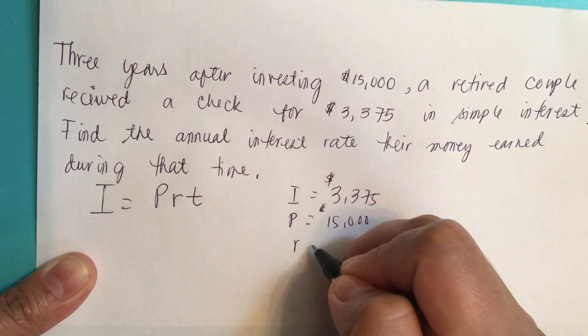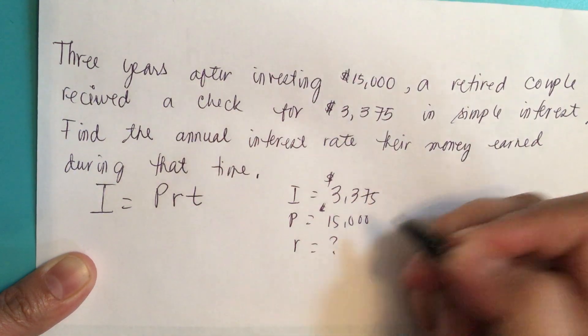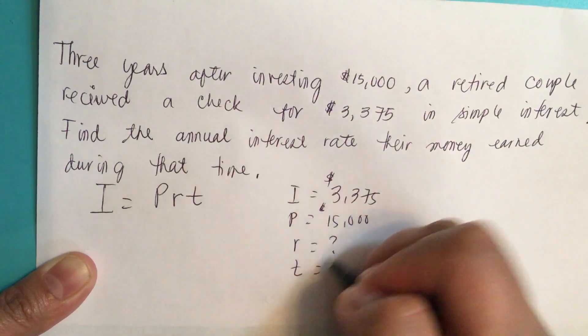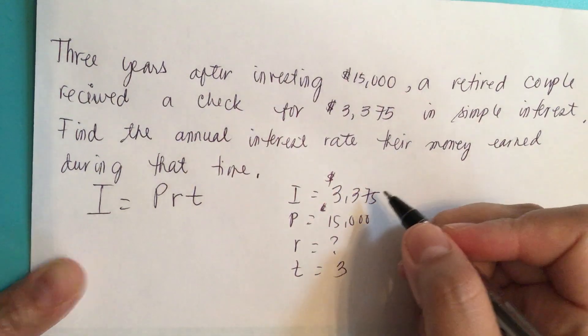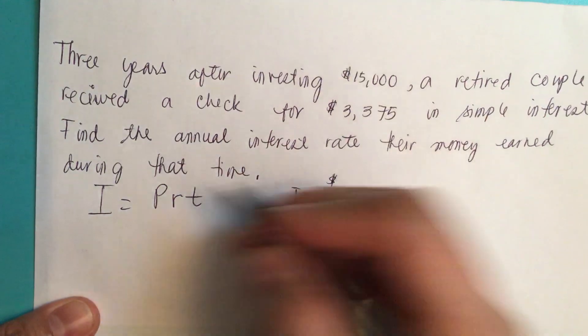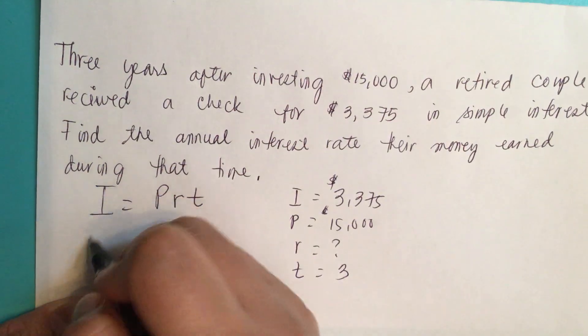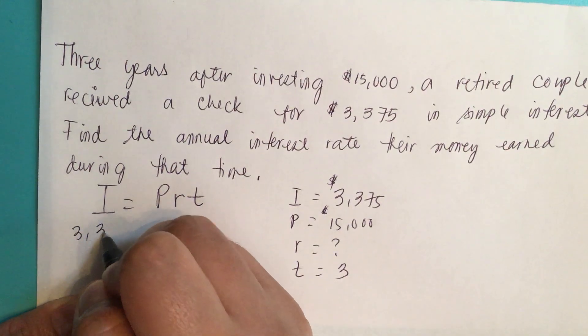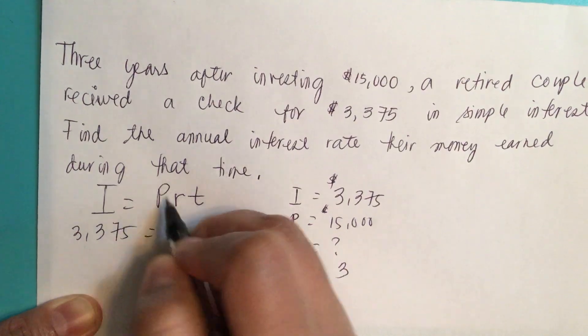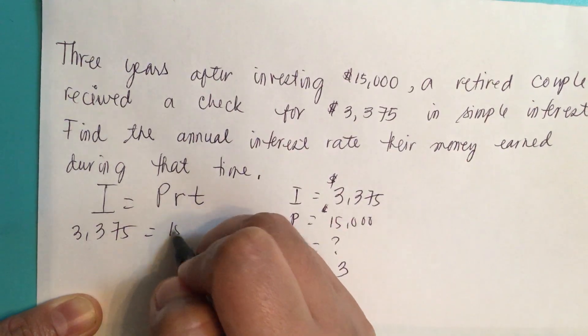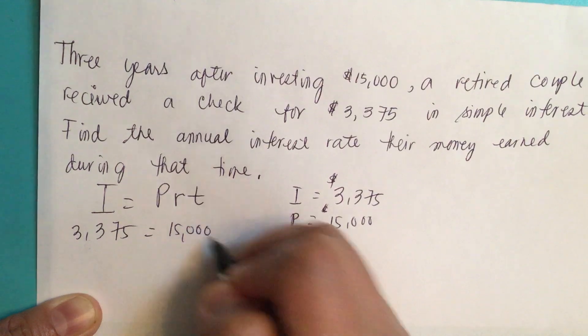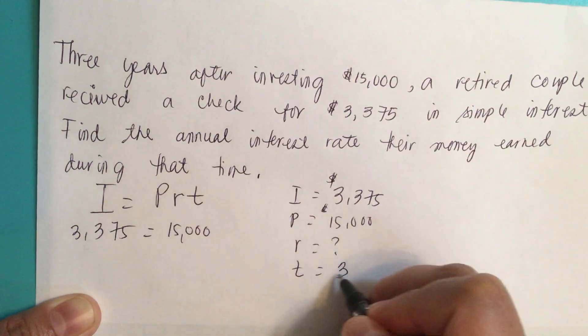R is unknown. We don't know. That's what they asked for. T is equal to 3. So we plug in our numbers. $3,375 equals P, which is $15,000, and T is 3.